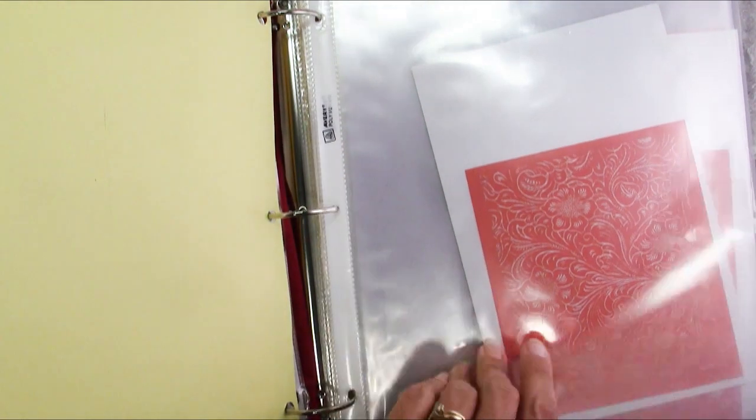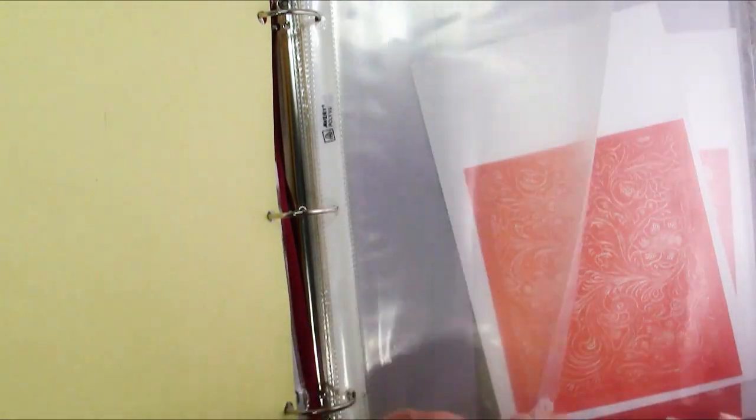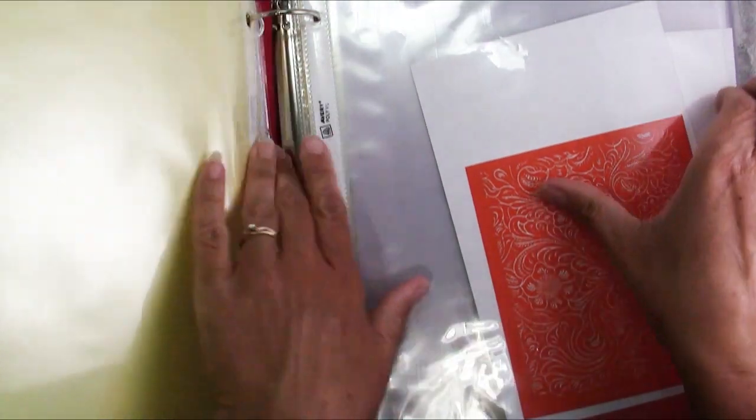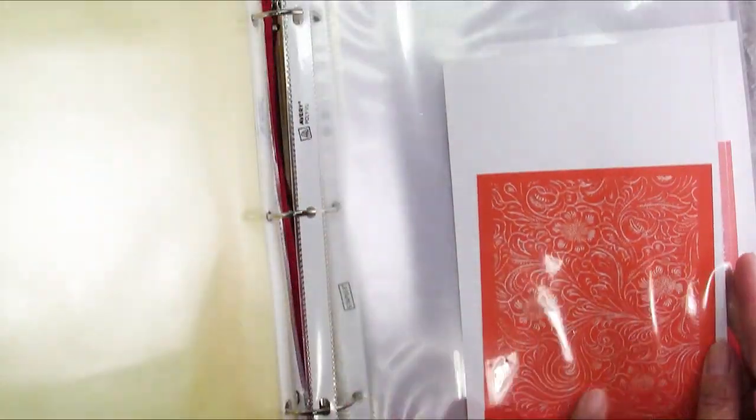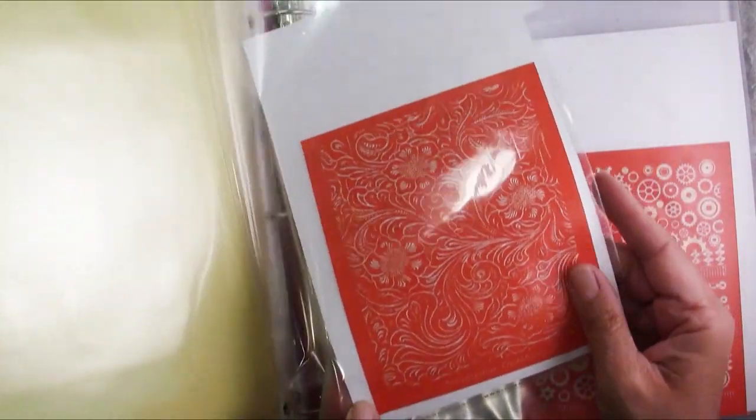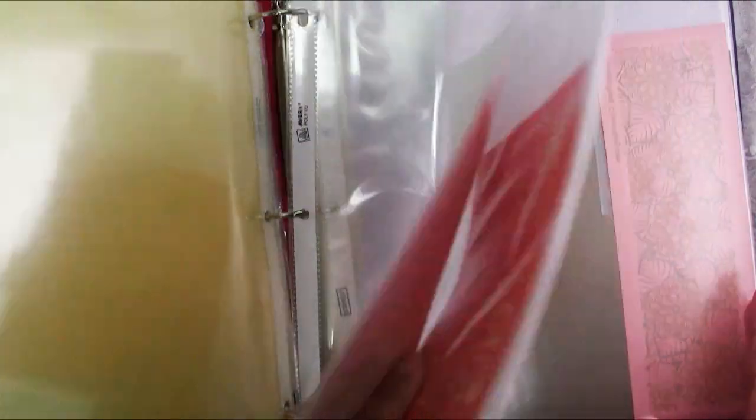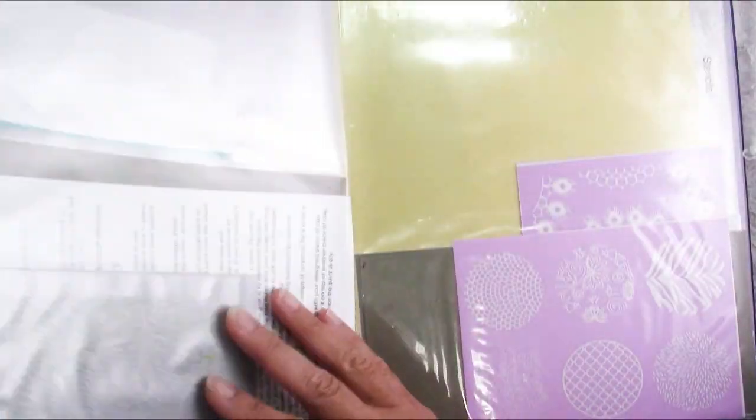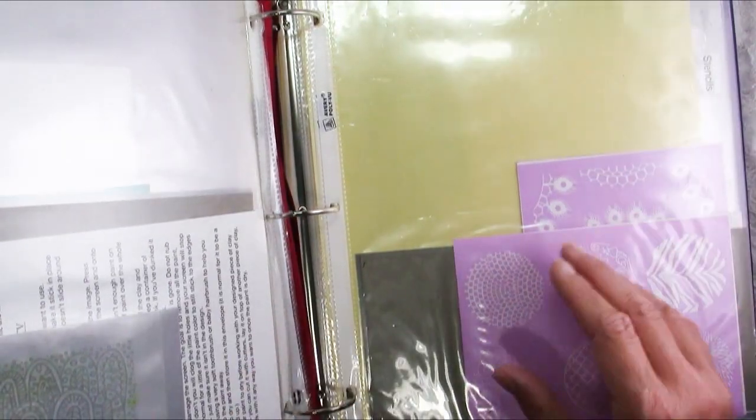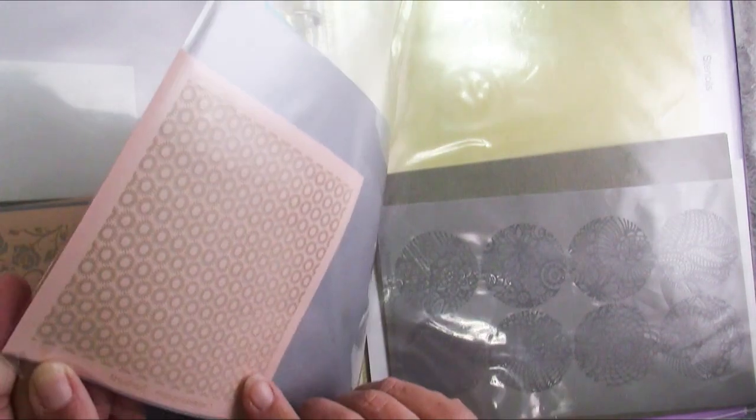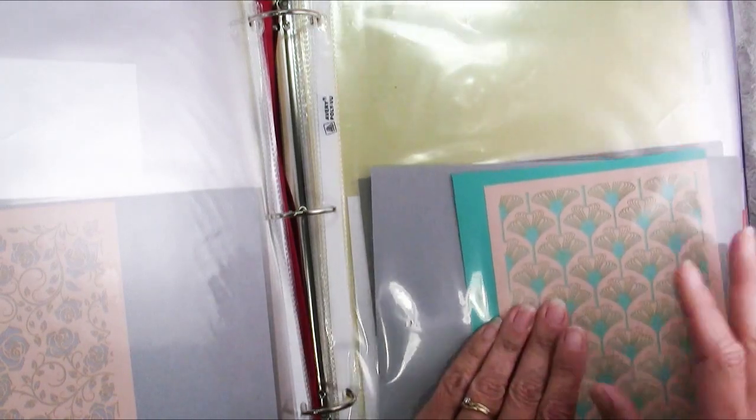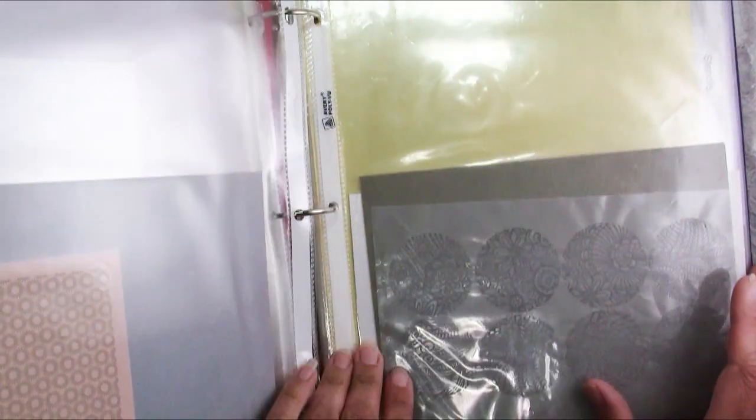And now I'm on to silkscreens and again I just have, I always try to have a few extra sheets in here so I don't have to fill it every single time I get a new one. And I have just something behind it so that I can clearly see what the silkscreen is. So these are all of my silkscreens in one place and I do have them on both sides. That's the benefit of having that bit of card stock there.